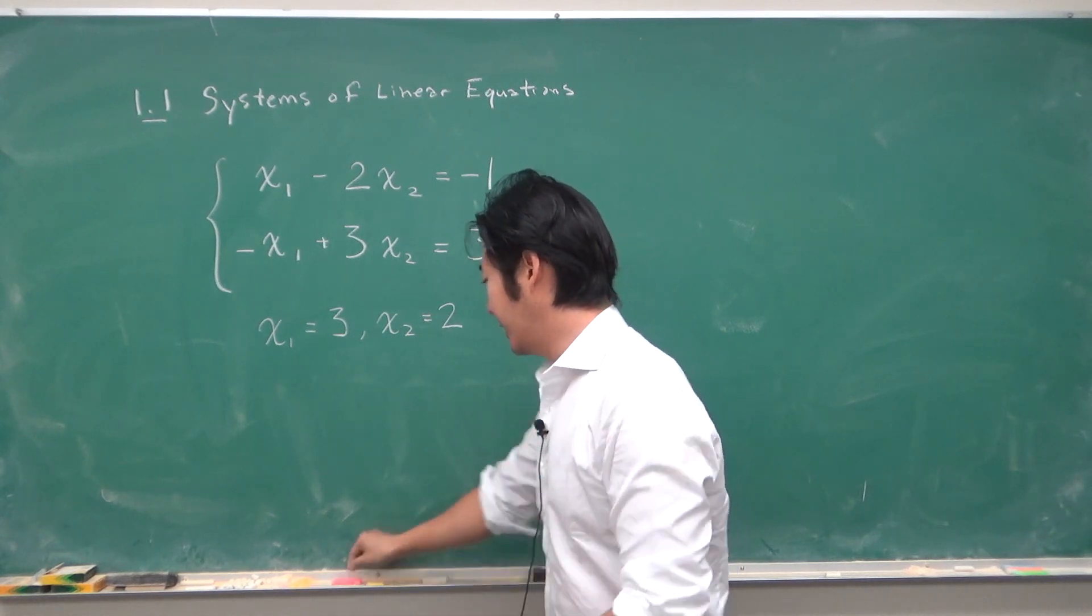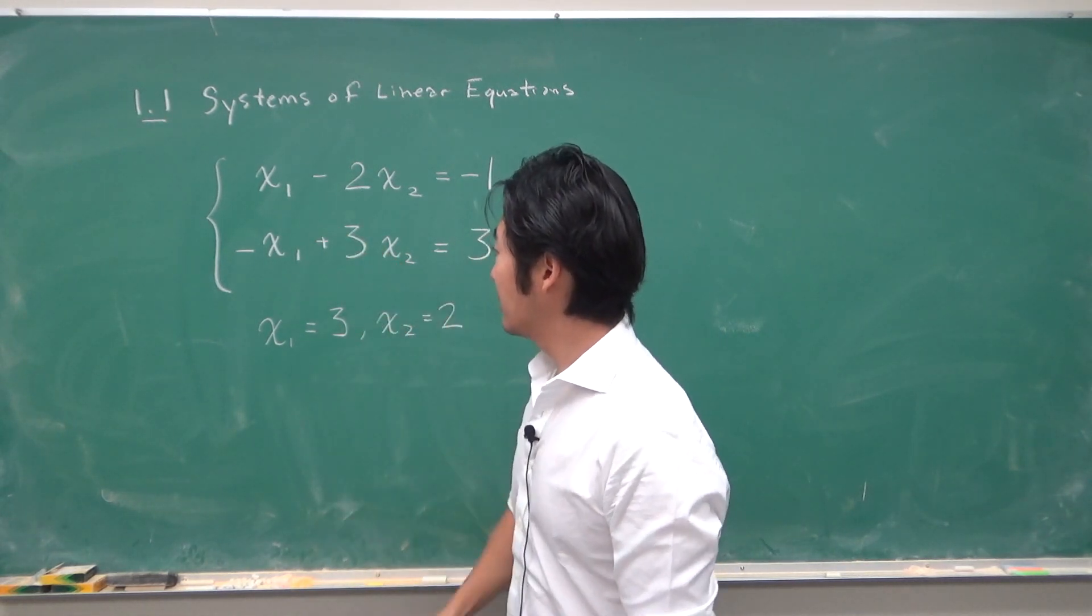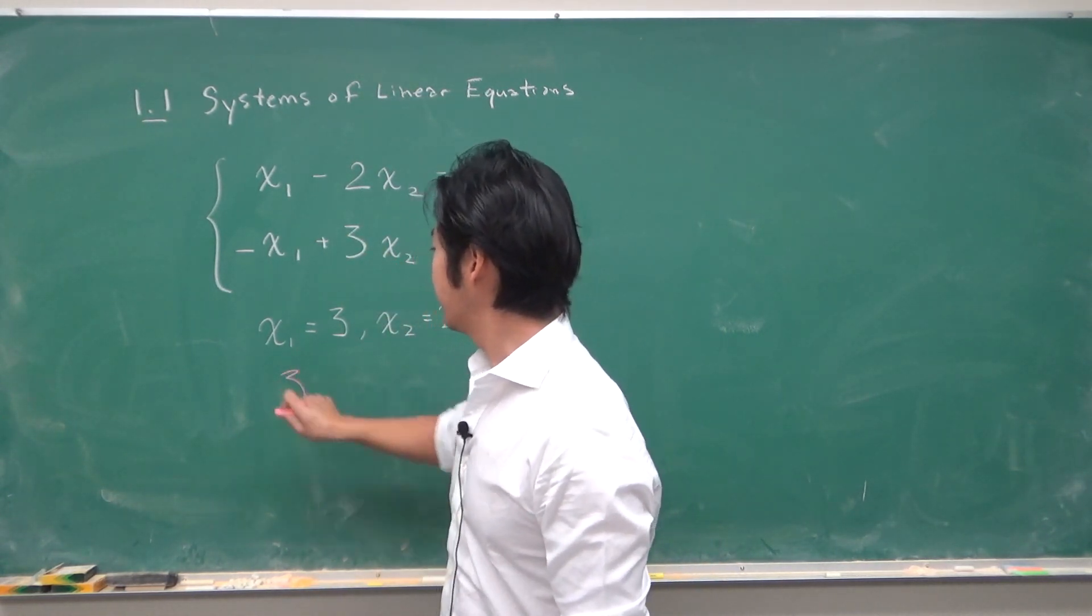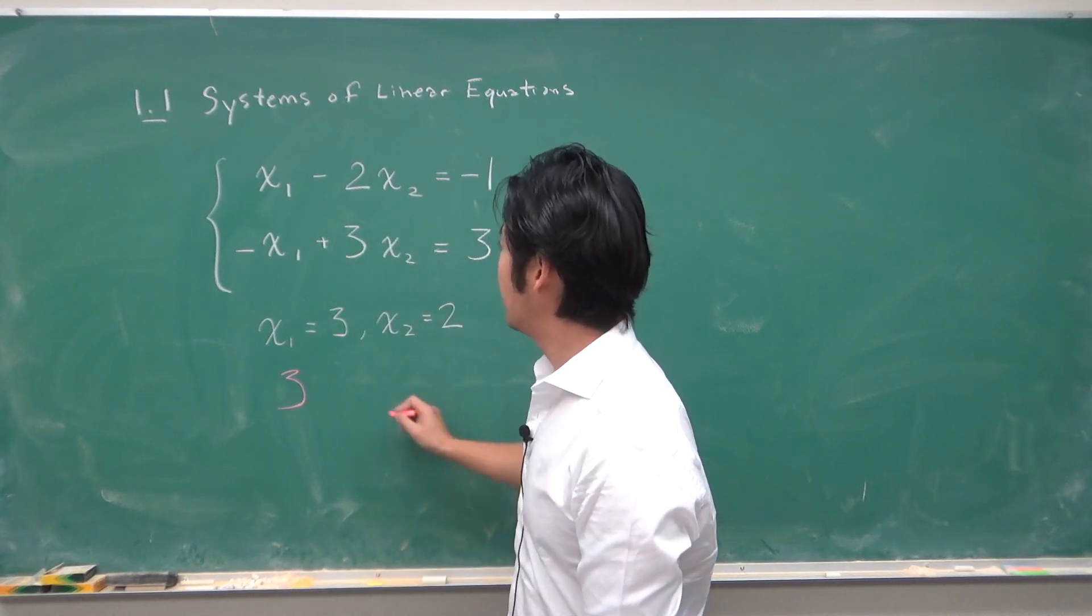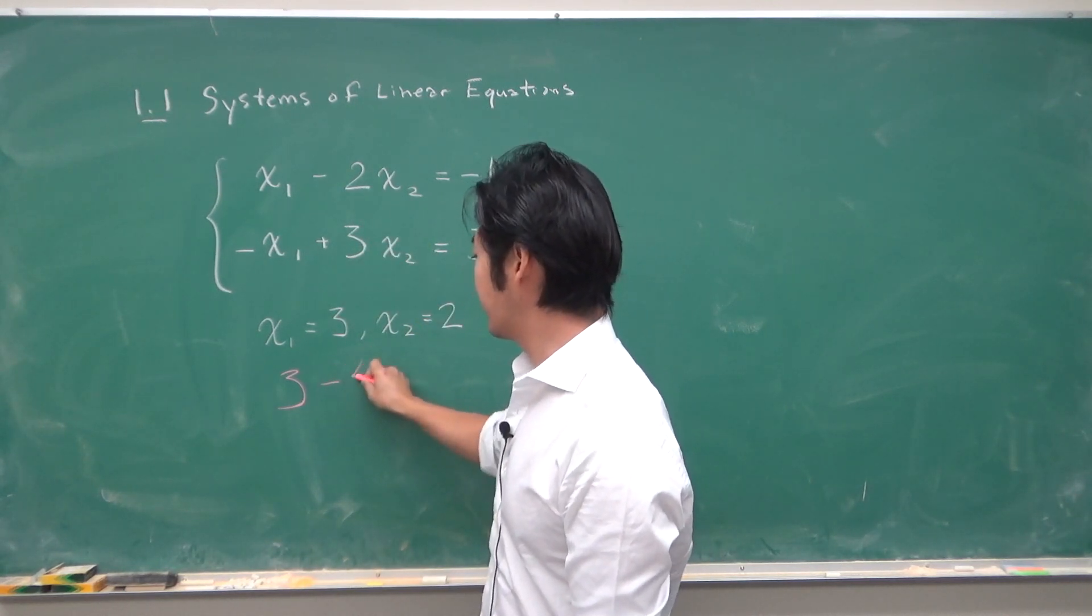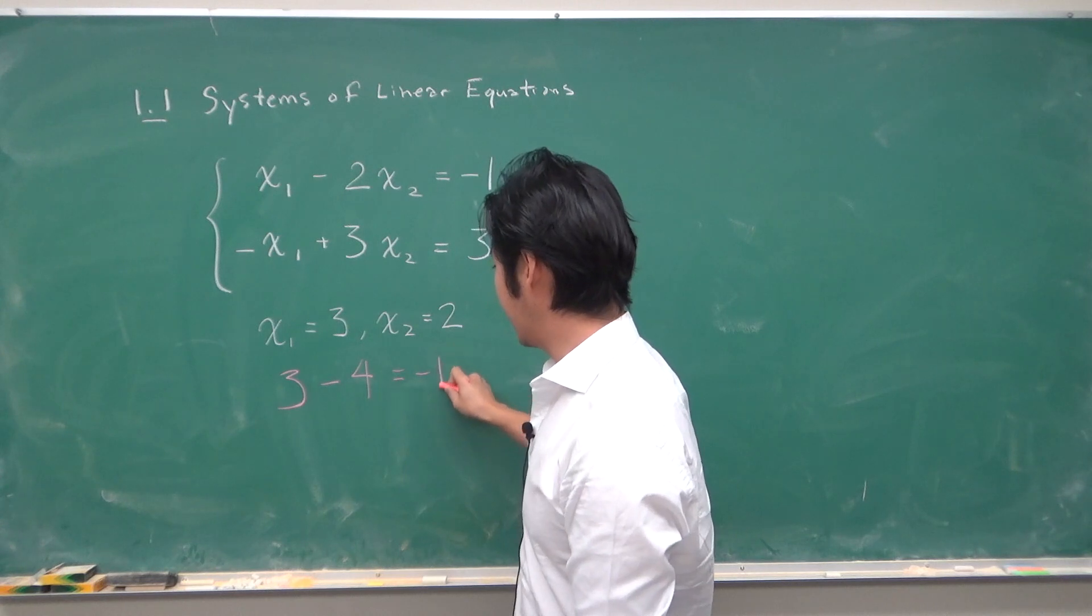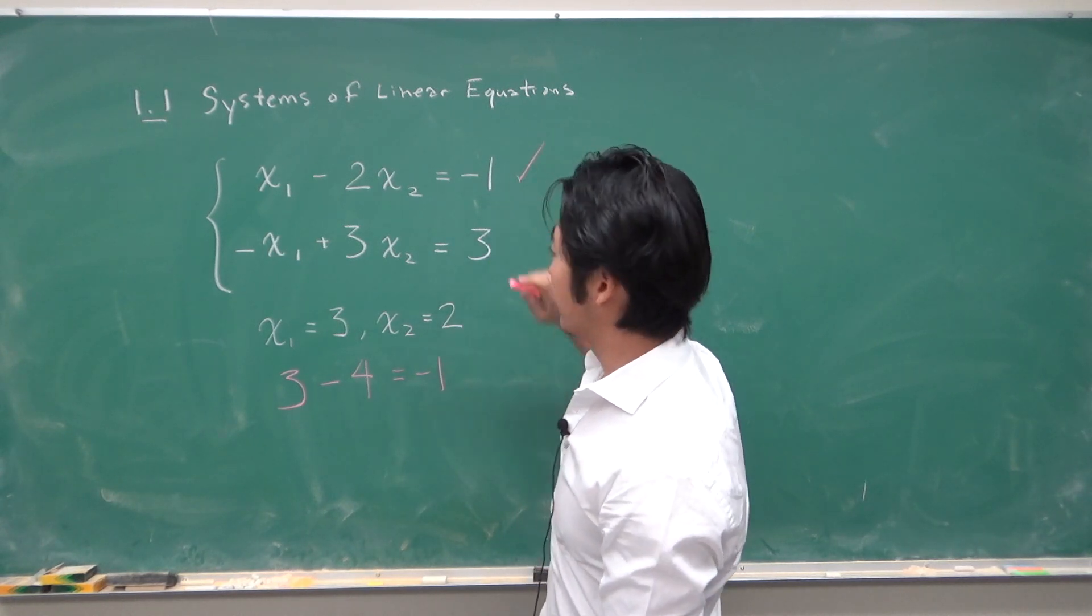How we verify? We plug it in. So in the first equation we have x1 is 3, x2 is 2, so we have minus 2 times 2 is 4. That is negative 1. So this one is satisfied.